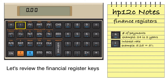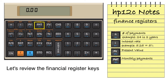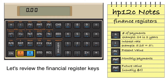PV is present value, or the loan amount. PMT is monthly payment. FV is future value. Usually in loan calculations, this value is zero, representing a fully paid off loan. We will also be using the blue G and F prefix keys.